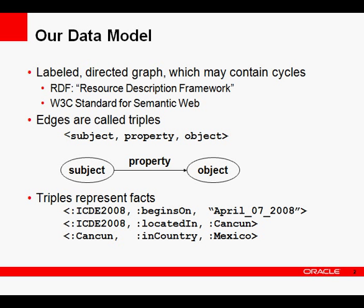Triples represent facts, and here we have some triples about ICDE 2008 and about Cancun. This is a very flexible way to represent data — pretty much anything you can imagine you can represent using enough triples.